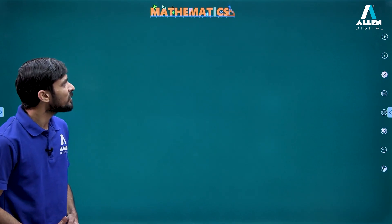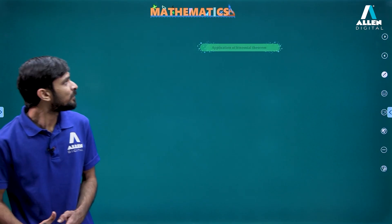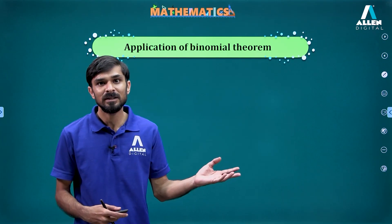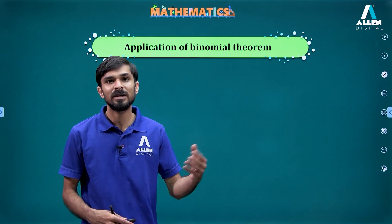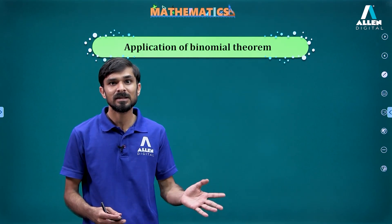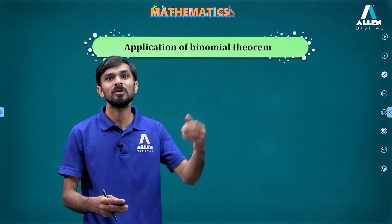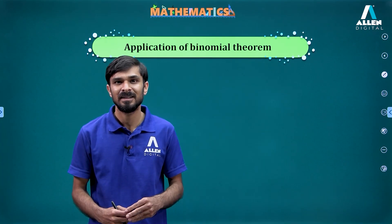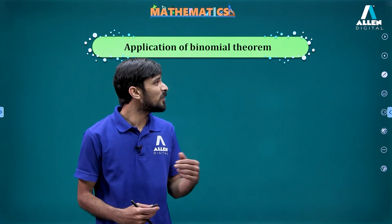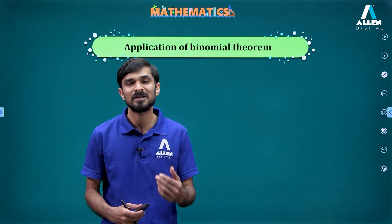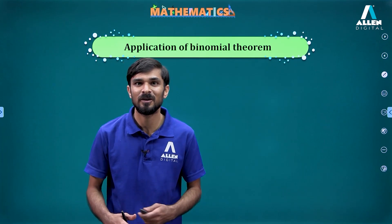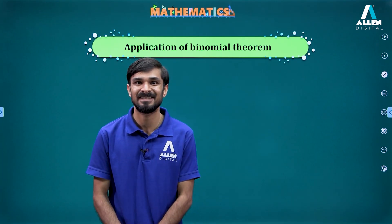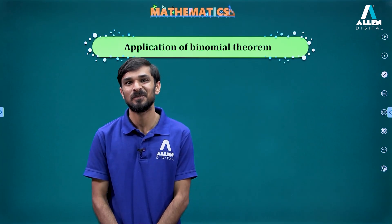So we understood how to use the binomial theorem to find remainders when something raised to a very large power is divided by a number. I hope you find it helpful and it saves you a lot of time when attempting these kinds of questions. Thank you.